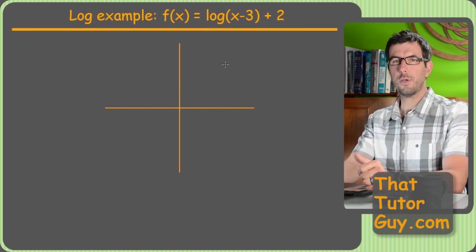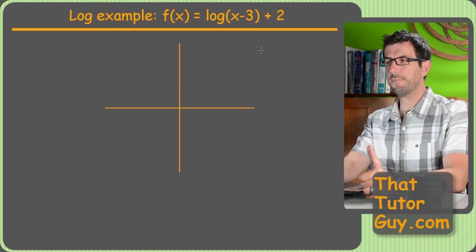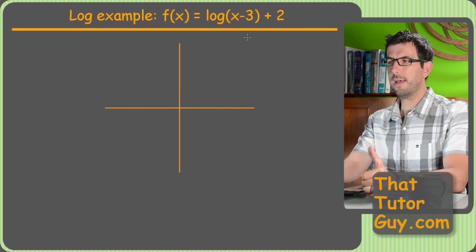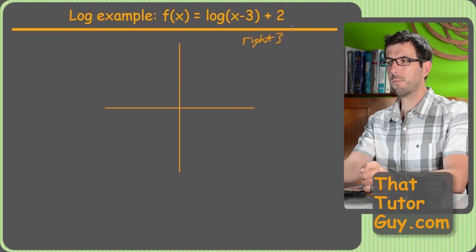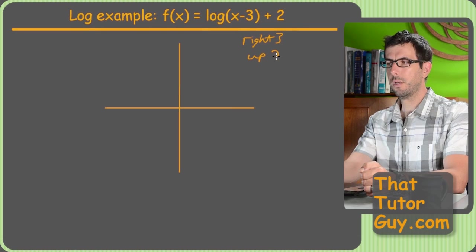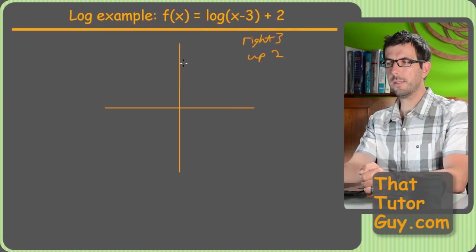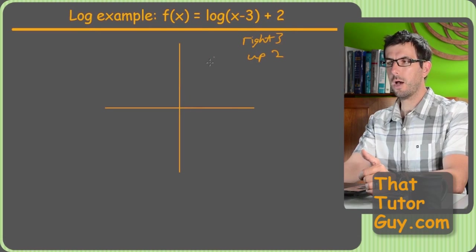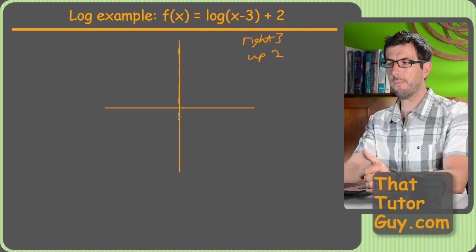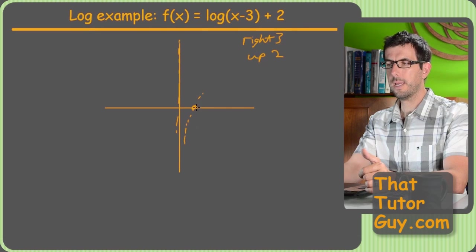Here's a log example. So first things first, let's figure out any shifts we got. Looks like we have a right 3 and we have an up 2. So the first thing I need to worry about is, what would my parent function have been? So a log, it had a vertical asymptote here, and it went through this key point (1, 0), and it kind of went up like that and shot sideways.